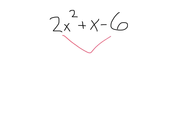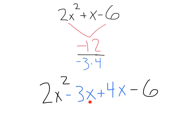We multiply our A times C to get negative 12. The factors negative 3 times 4 multiply to negative 12. Negative 3 plus 4 gives me that 1. Replacing those in, I get 2x squared minus 3x plus 4x minus 6.